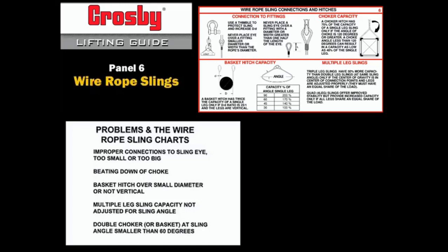Placing a basket hitch over small diameter or not having the legs vertical. Multiple leg sling capacity not adjusted for the effects of the sling angle. Using a double choker or double basket at sling angles smaller than 60 degrees.